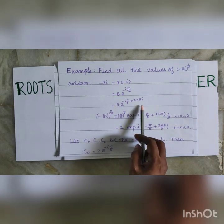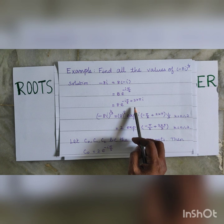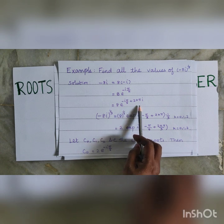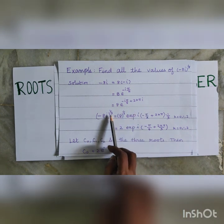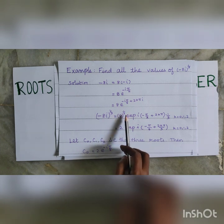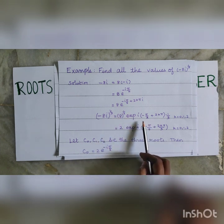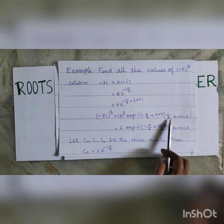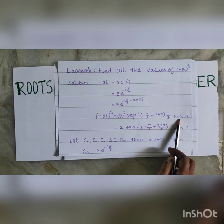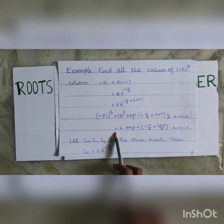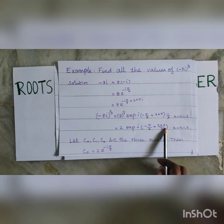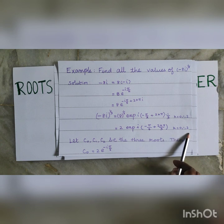Now adding 2k pi i, since e power 2k pi i is 1, we have 8 into e power i times minus pi by 2 plus 2k pi. Now minus 8i power 1 by 3 equal to 8 power 1 by 3 times exponential i into minus pi by 2 plus 2k pi divided by 3. K takes the values 0, 1, 2. This is equal to 2 into exponential i times minus pi by 6 plus 2k pi by 3, for k equal to 0, 1, 2.